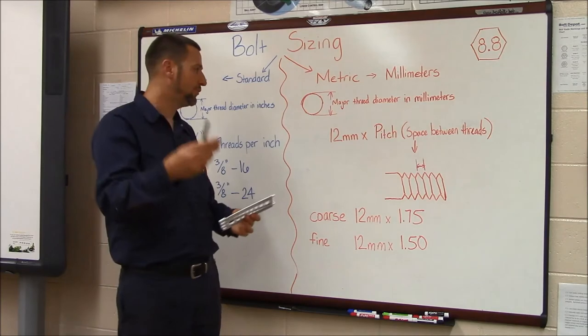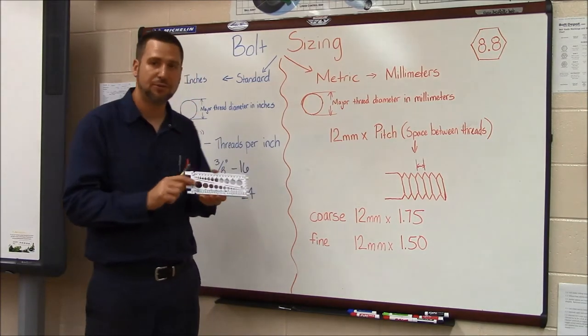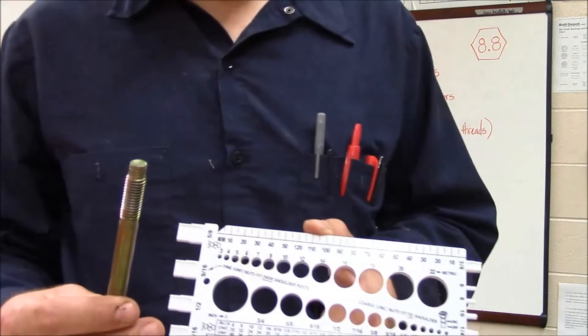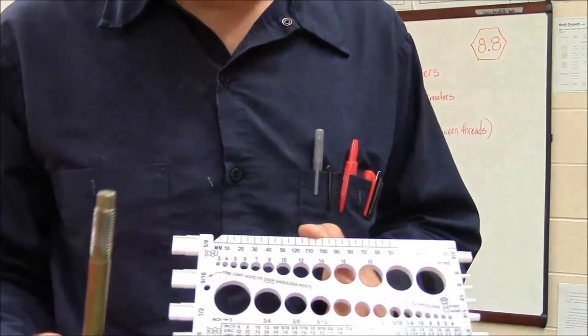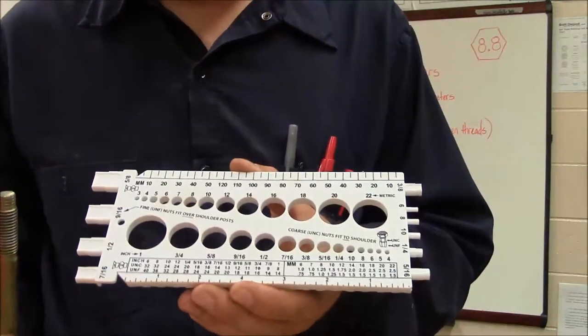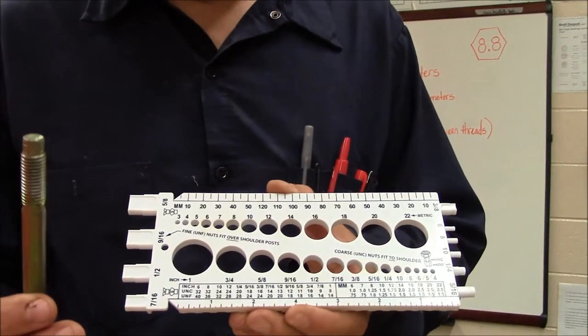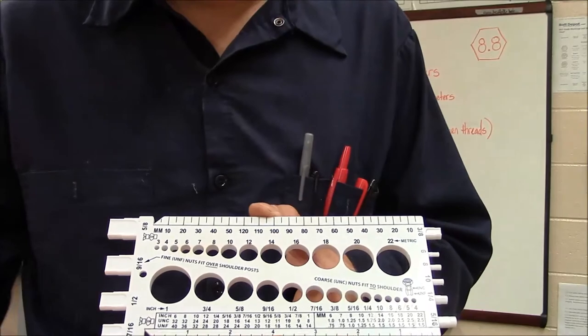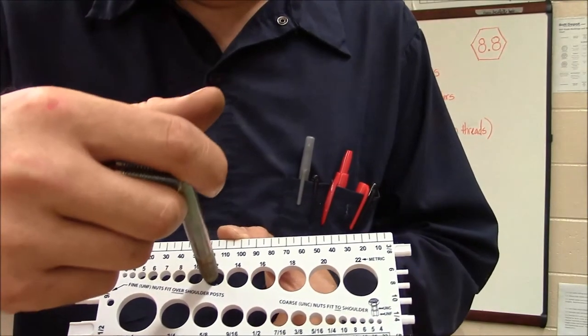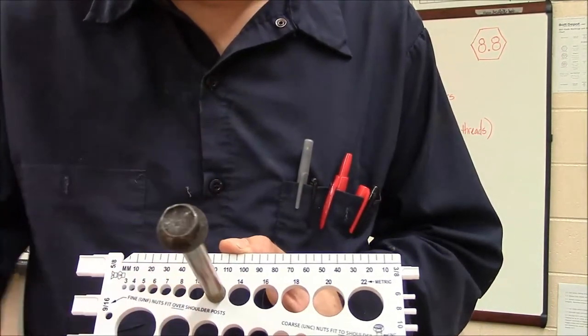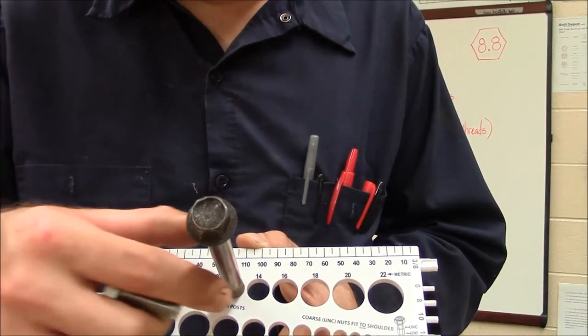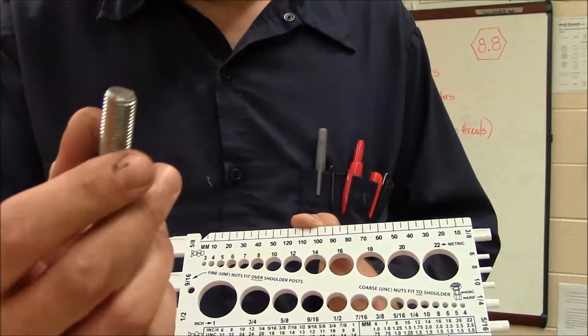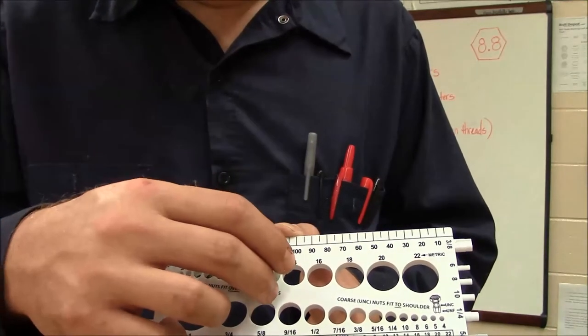I have two metric bolts right here, I'm going to figure out what their major thread diameter is with my bolt gauge. And what I like to do to improve my skill is before I even stick it in the hole in this gauge, I look at it and I take a guess on which hole it's going to fit in. And I believe that these are 12mm bolts, so I'm going to try it up here in the 12mm hole. And it fits perfect. I have a second bolt, this is also a 12mm bolt.